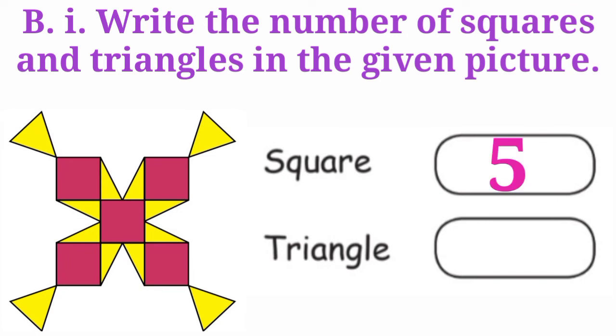Proceeding, let's count the triangles. In the corners of the squares, there are 4 triangles. In between the squares, there are 8 triangles. Totally, 12 triangles. Write it.